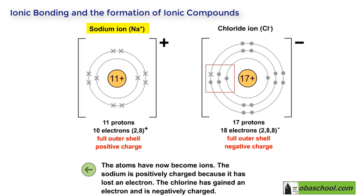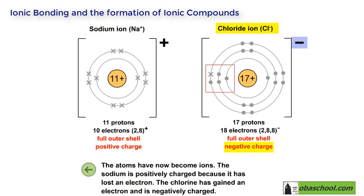The sodium is positively charged because it has lost an electron, and the chlorine has gained an electron and is negatively charged. Notice that both ions now have a full outer shell.